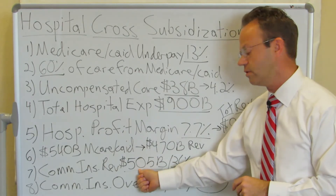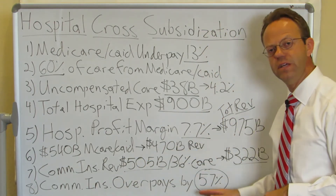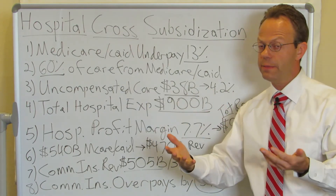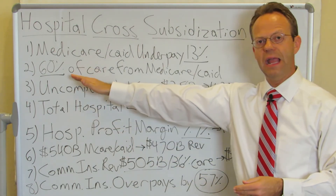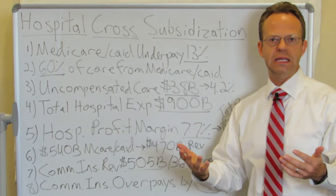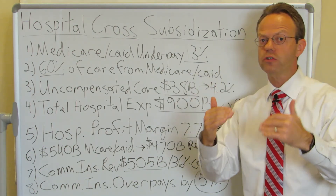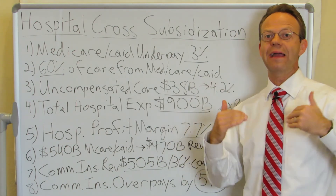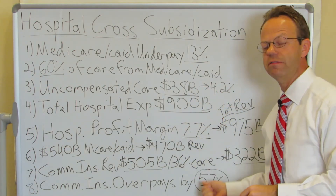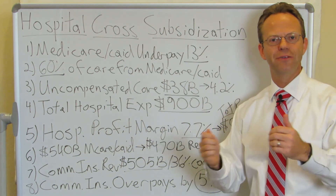Doing the math on $505 billion of revenue and $322 billion of expense, the punchline is: commercial insurance overpays by 57%. Now, all these numbers are approximations — the 13% underpayment by Medicare and Medicaid, the 60% share of care, maybe it's 58 or 62. But the point is that Medicare and Medicaid underpay, and commercial insurance — which is really employers in America with their premiums, or if they're self-funded, they're paying the claims themselves — overpays by 57% to make up for the underpayment. That's my point for today. Thank you for watching A Healthcare Z.